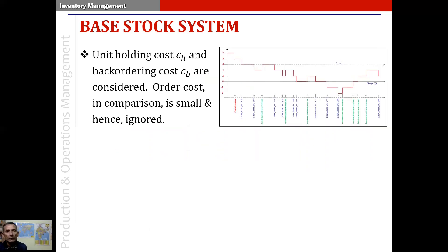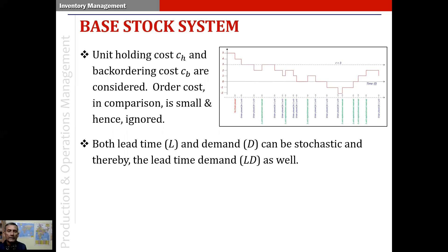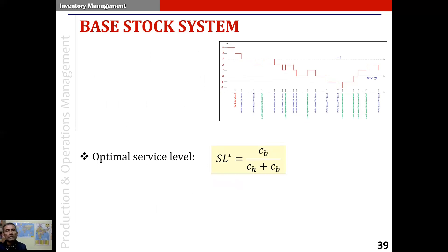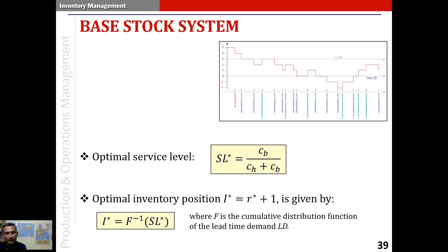To model the system and calculate the optimal reorder point, we use the unit holding cost and the unit backordering cost. The order cost is considered small in comparison and therefore ignored, because the items are of very high value and have very high holding or backordering costs. Both lead time and demand can be stochastic, so lead time demand is also stochastic. Due to the low demand rate, this is usually modeled as a discrete distribution. The optimal service level SL* equals CB divided by (CH plus CB), where CB is the unit backordering cost and CH is the unit holding cost. The optimal inventory position I* = R* + 1 is determined from the optimal service level using the inverse cumulative distribution function of the lead time demand.